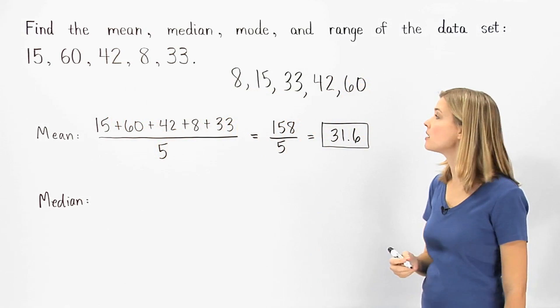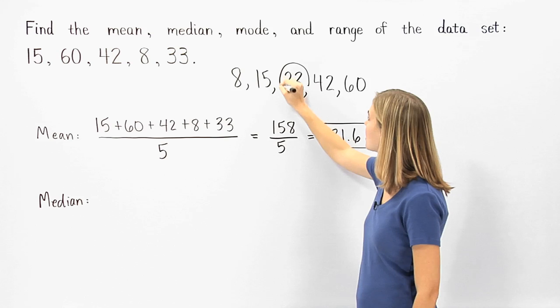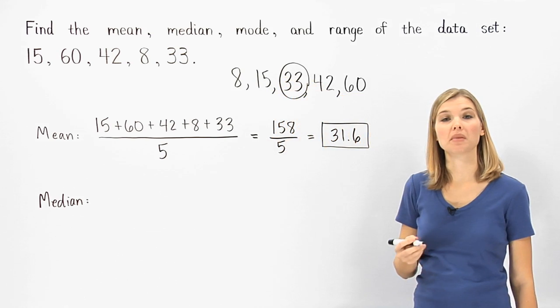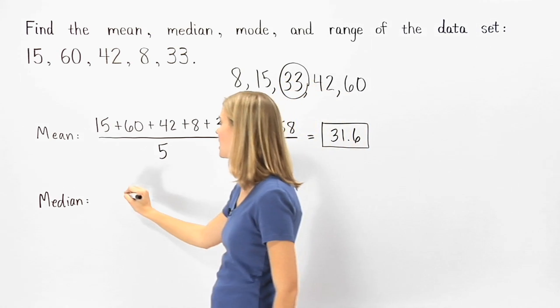Now, we can see that the middle number is 33, because 33 has two numbers on either side of it. So the median of the given data set is 33.